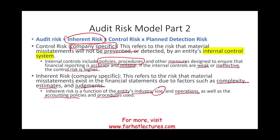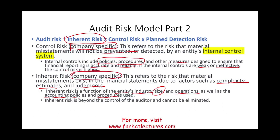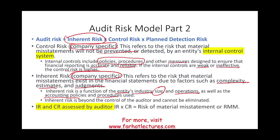If a company is using accounting policies that are not conservative — for example, when they have to choose between an asset and an expense, they always choose asset — that increases inherent risk. Conservatism says if you have to choose between an asset and an expense, choose the expense. Inherent risk and control risk are beyond the control of the auditor and cannot be eliminated because they are company-specific. Both inherent risk and control risk are assessed — the auditor passes judgment on them — but the auditor does not control them.